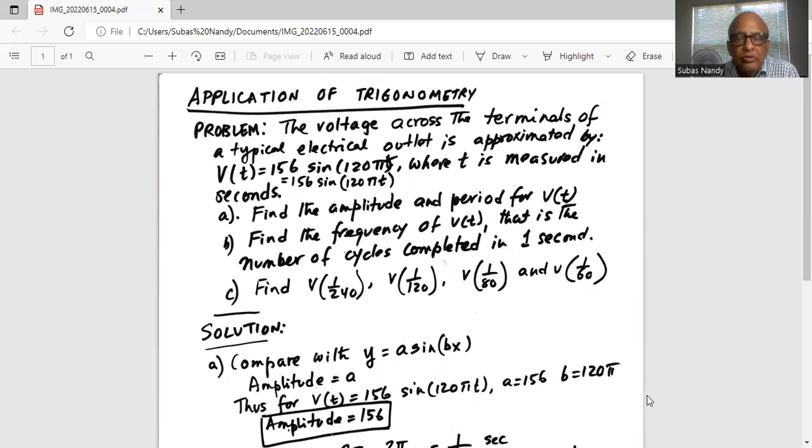So part a, find the amplitude and period for V(t). Find the frequency of V(t), that is the number of cycles completed in one second, and find the value of the voltage at the following times.